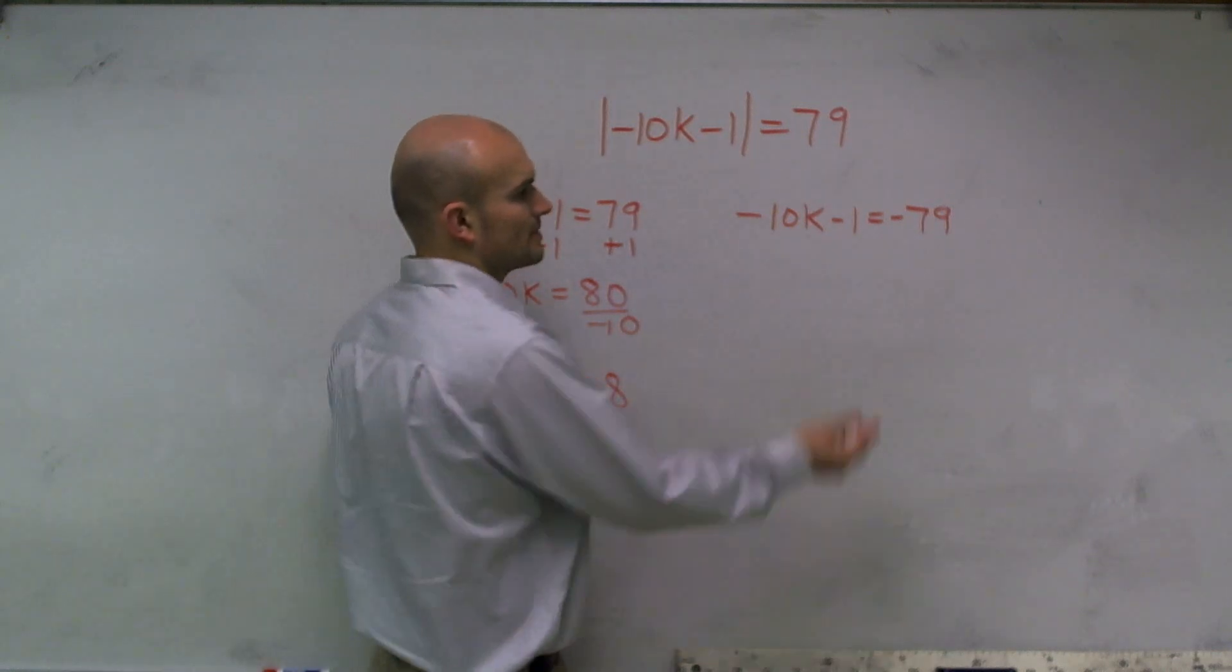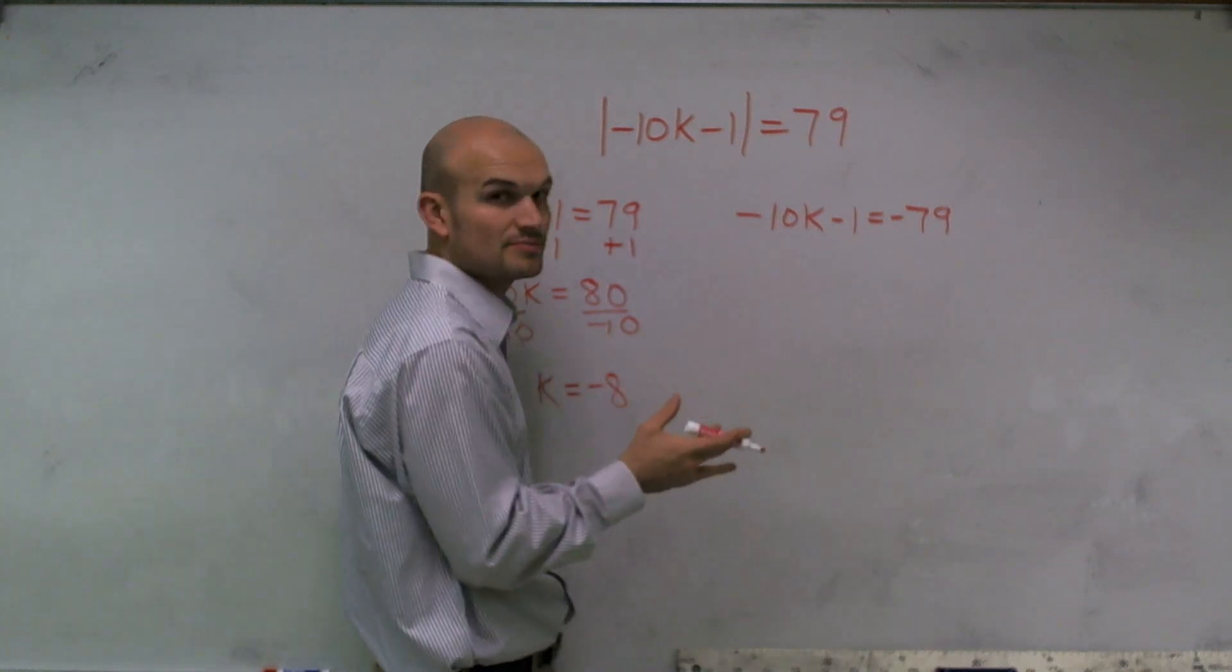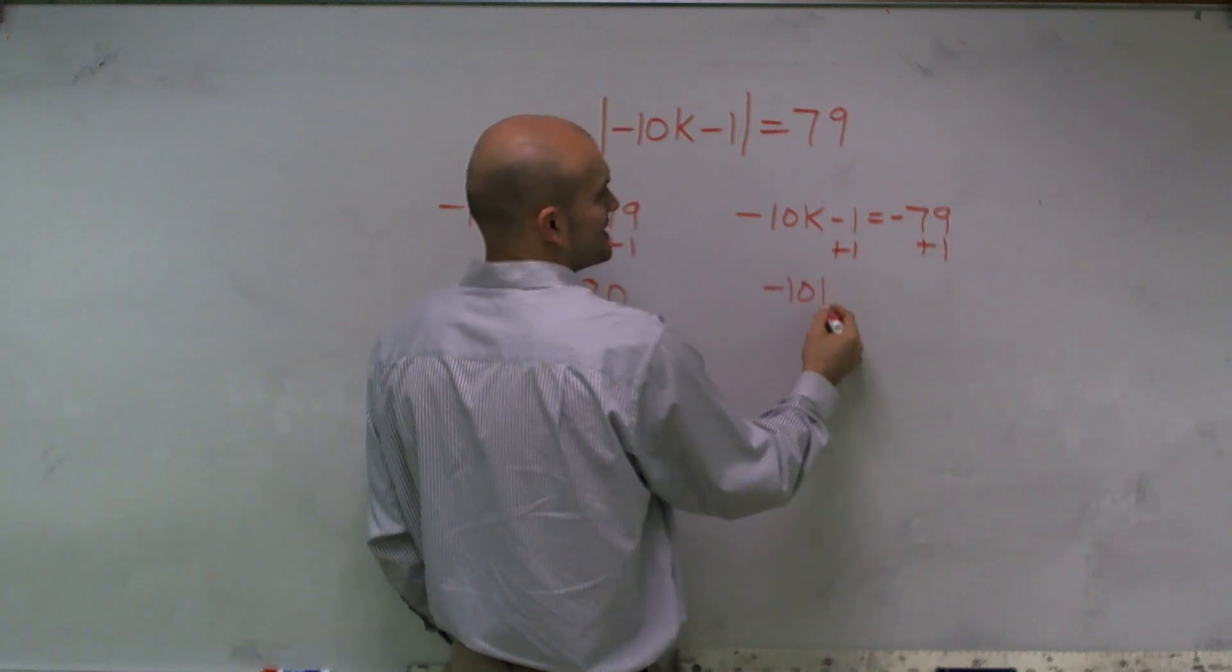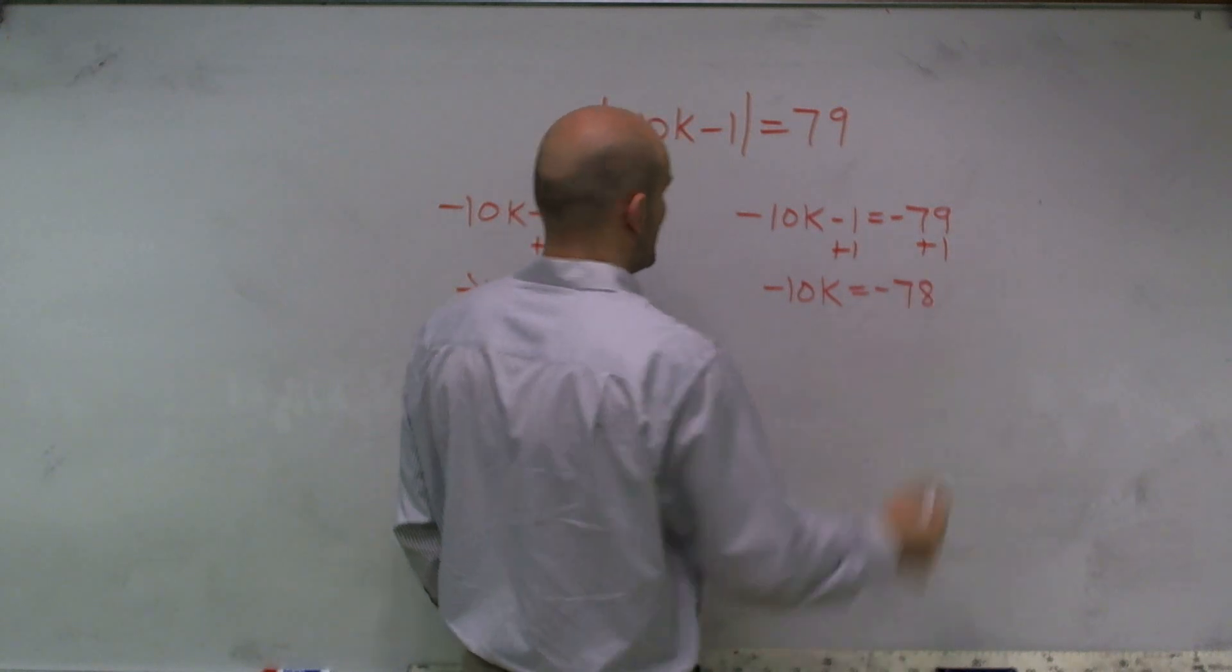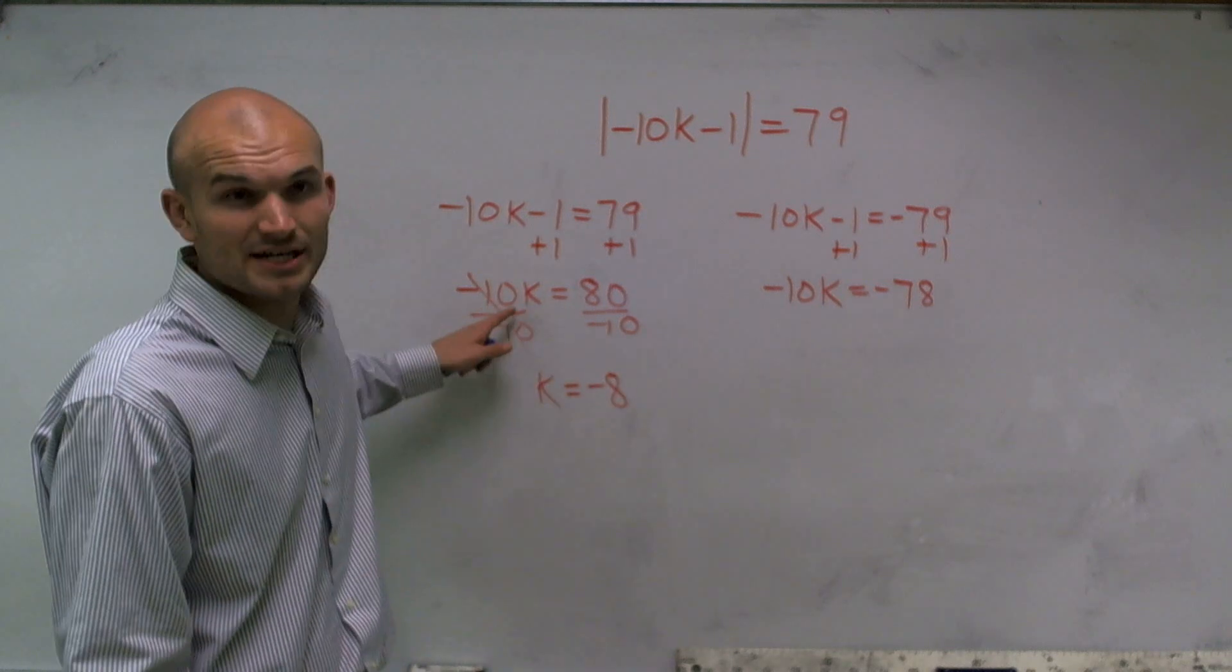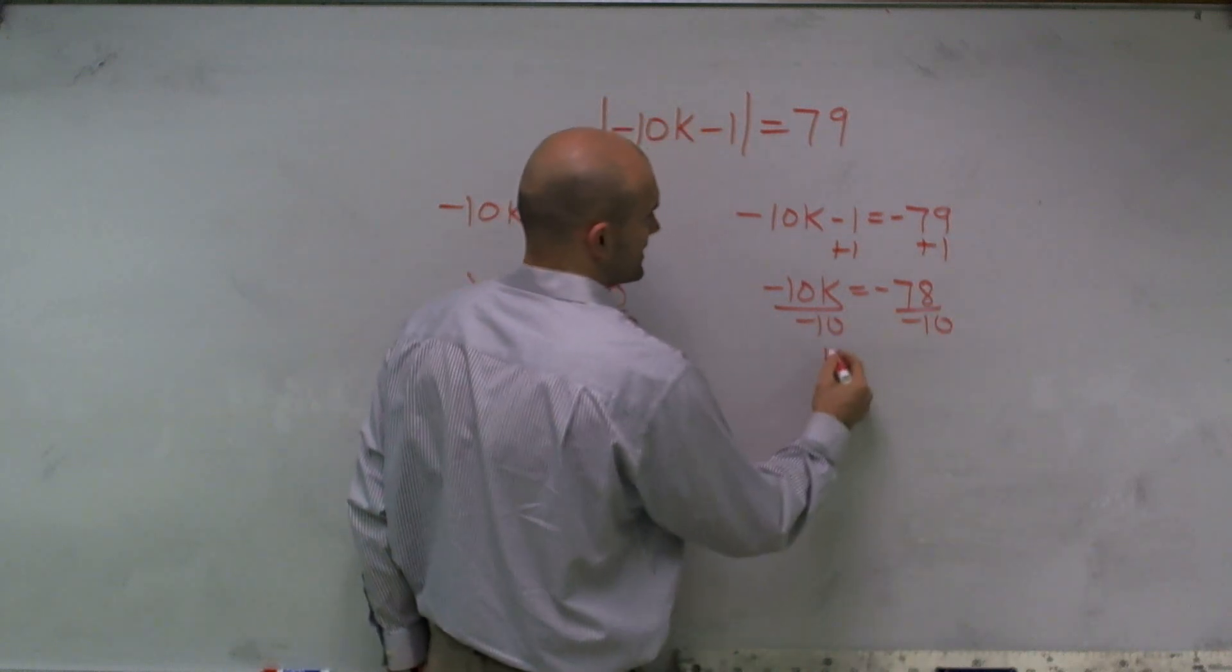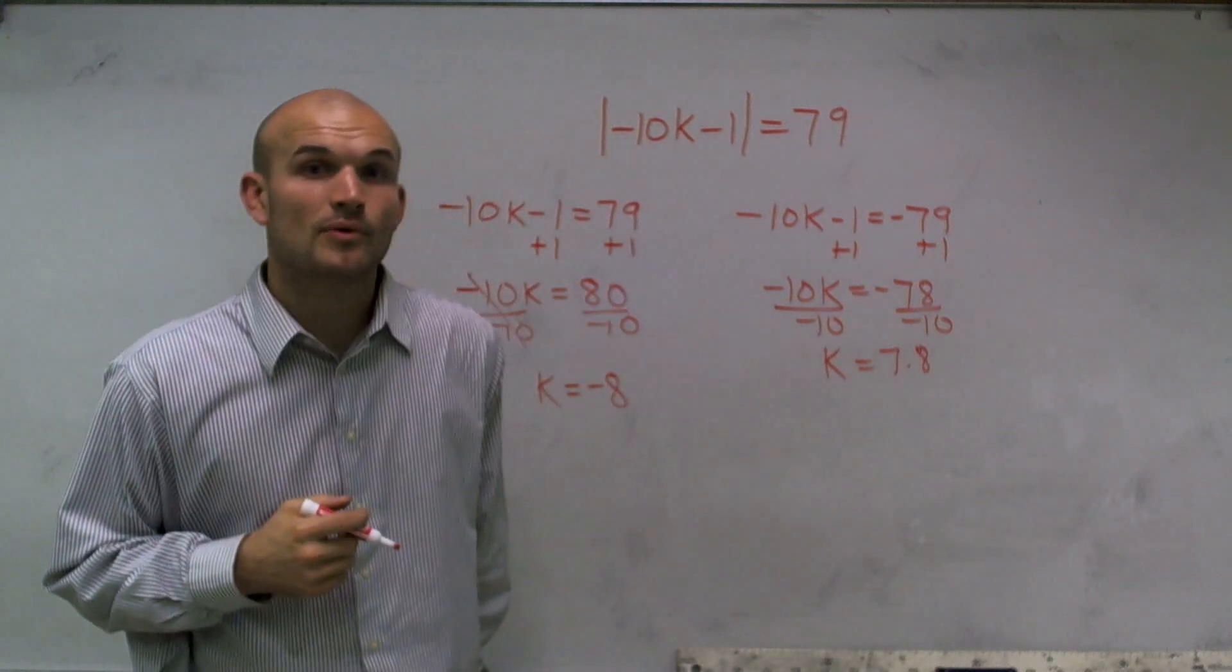The next one, to solve for k, I need to isolate my k. So the first thing I'm going to do is undo addition and subtraction. I need to undo my subtraction of 1, so I'll add 1 to both sides. Therefore, I obtain negative 10k equals negative 78. Now again, I need to undo multiplication by negative 10 like I did with the previous problem. So to do that, I'll divide by negative 10, and I get k equals positive 7.8.